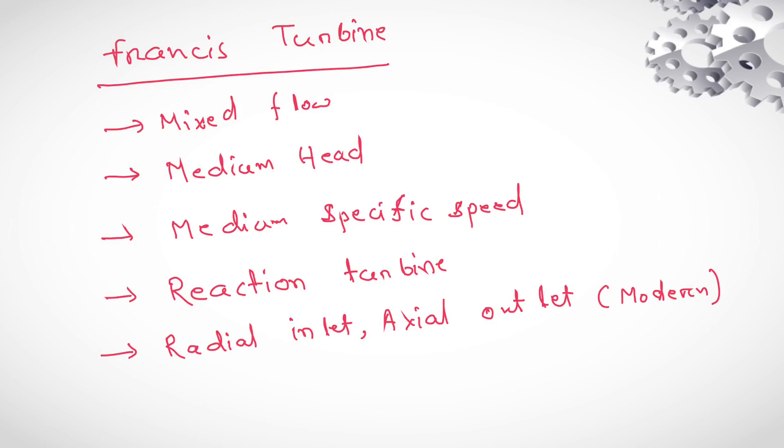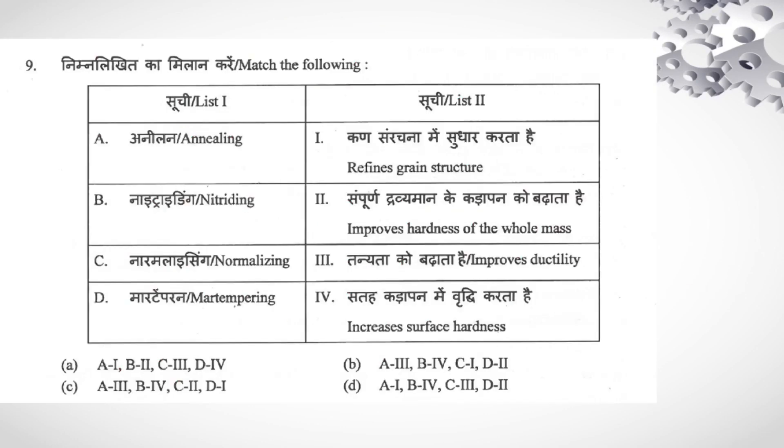Match the following, list 1 and list 2 matching. We know in case of annealing, we are doing furnace cooling, slowest cooling rate, it improves ductility. And for nitriding, nitriding, it is a surface hardening process. Then you are using nitriding for low carbon steel. And normalizing its air cooling, cooling rate is little bit faster than annealing. Annealing we are using furnace cooling, and normalizing we are using air cooling. And normalizing, it refines grain structure.